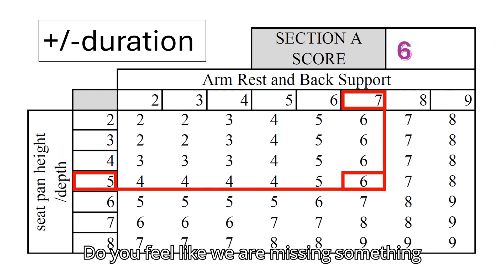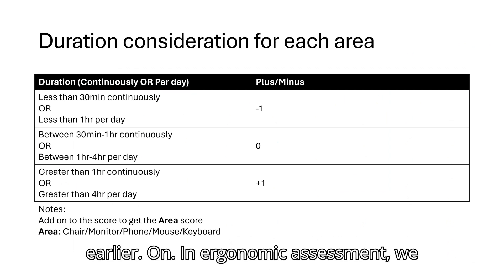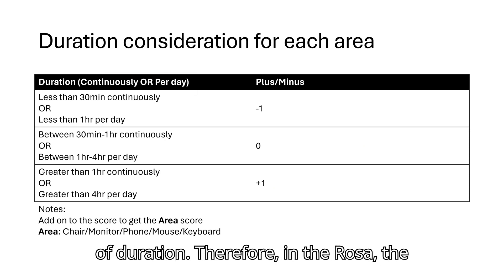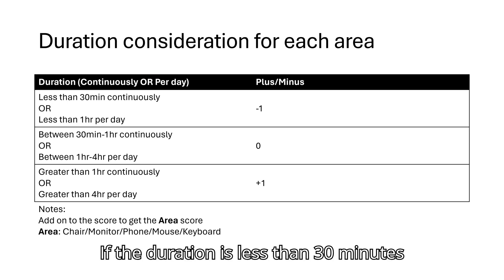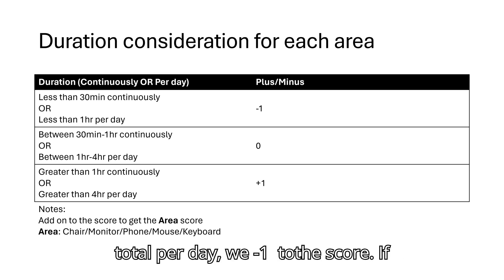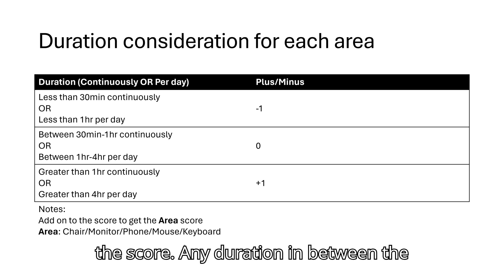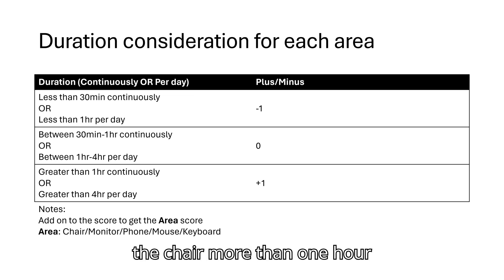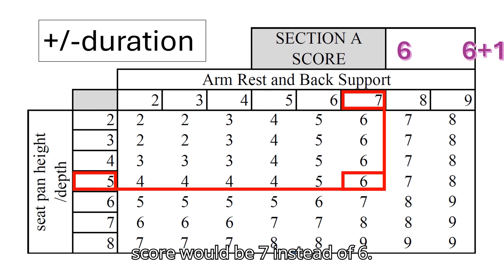We also need to consider the duration risk factor. In ROSA, the scoring adjustment based on duration follows a table: if duration is less than 30 minutes continuously or less than 1 hour total per day, we subtract 1 from the score. If greater than 1 hour continuously or more than 4 hours per day, we add 1 to the score. Any duration in between scores 0. In this example, the worker is a clerk who sits on the chair more than 1 hour continuously, so we add 1, making the final Section A score 7 instead of 6.